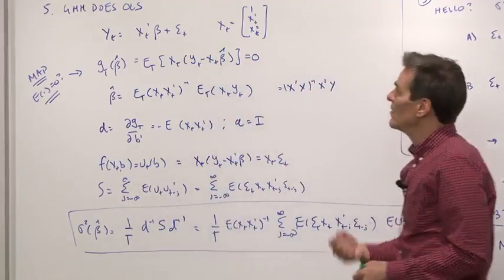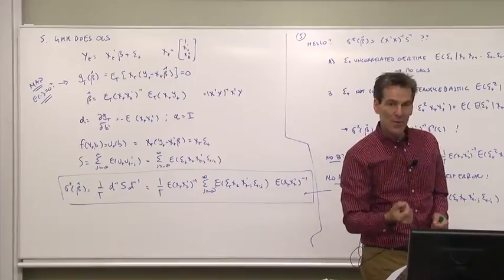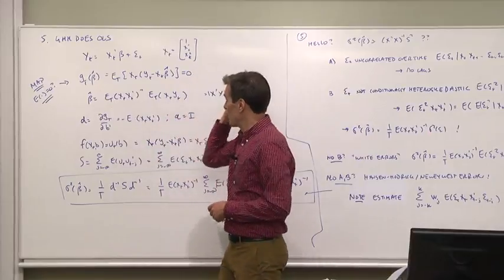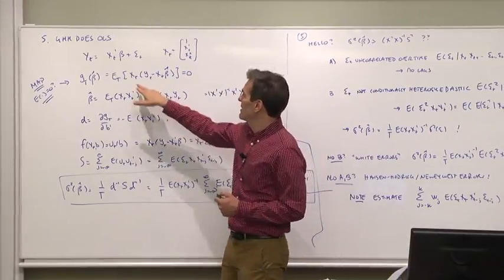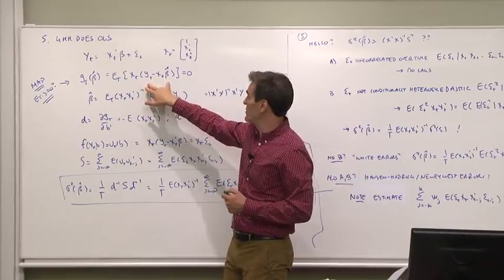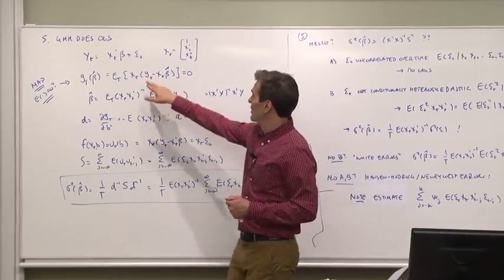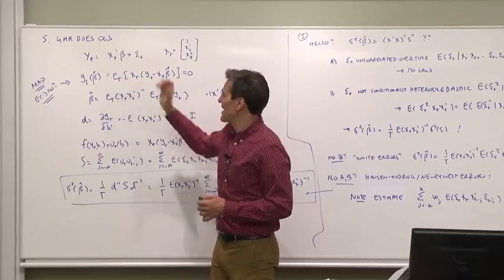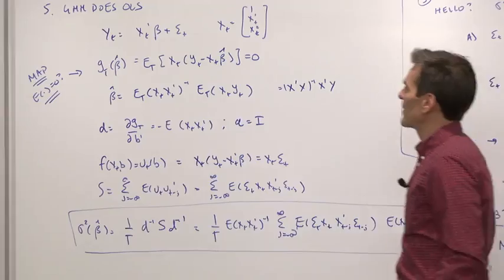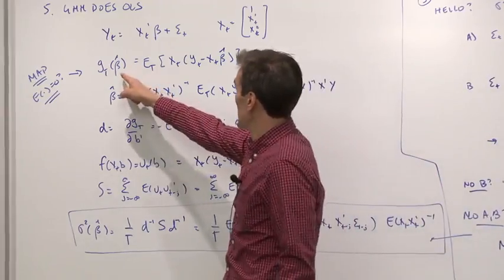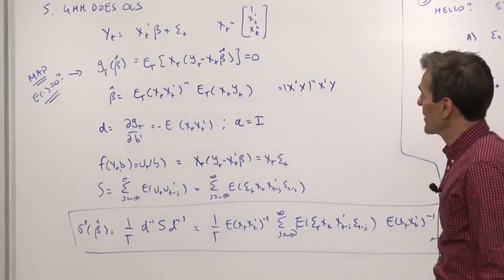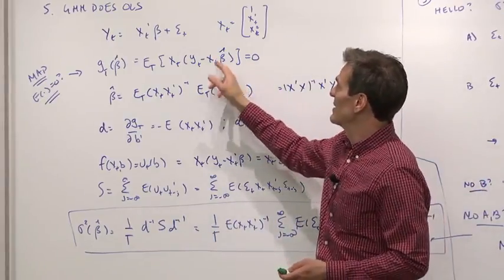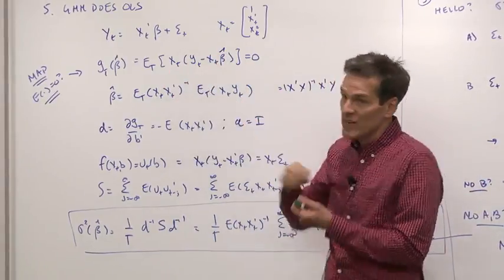So we want to estimate that. Let's map it into GMM. We have to find a function of the parameters that is supposed to be zero, a gt. The gt was the function of parameters that should be zero. Well, OLS is defined by the right-hand variable x is orthogonal to the error term, y minus x beta. So error terms are orthogonal to the right-hand variables. Let's use that as our moment defining the parameter beta that we want to estimate. So there's gt of beta, et of y minus x beta equals zero. Now, in this case, we have the same number of moments as we have parameters. There's three betas and three moments. The three x's are each orthogonal to the error term.